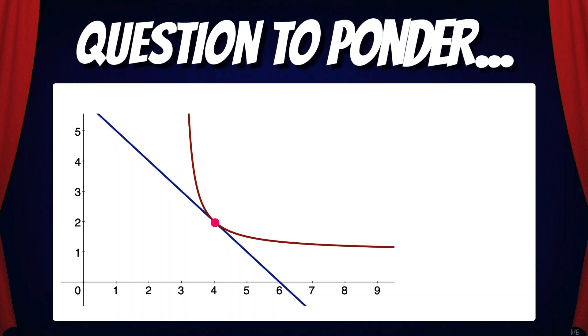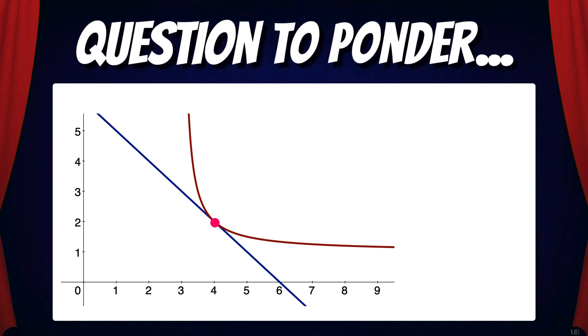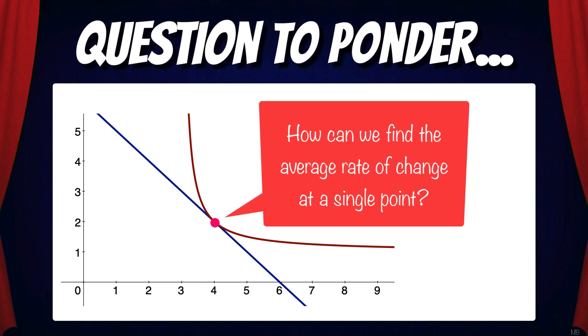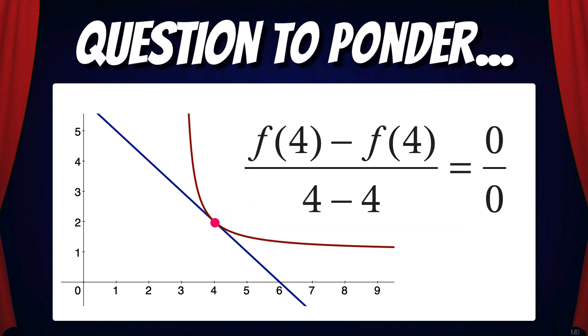So let's end with a question to ponder. How do you think you'd find the slope at a single point on a curve? In other words, how can we find the average rate of change at a single point? If we apply our average rate of change formula here, we would get [f(4) - f(4)] / (4 - 4), which is 0/0.